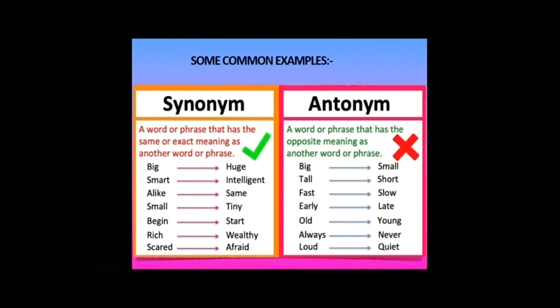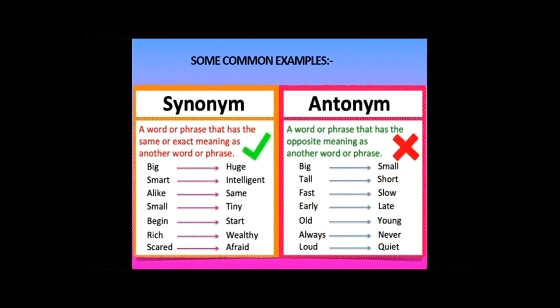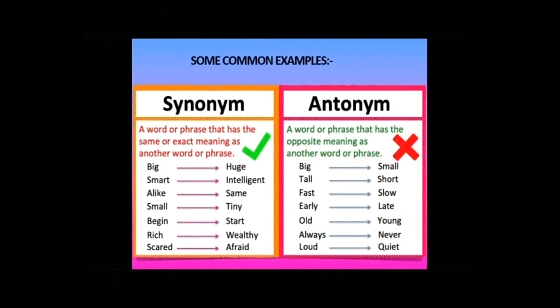Then: alike, same, ditto. Small, tiny, mini — only degrees differ but they are all synonyms. Begin — start: 'Let's begin the race' or 'Let's start the race.' Rich — wealthy: 'He is very rich' or 'He is very wealthy.' Scared — afraid: 'I am scared of lizards,' 'I am afraid of lions.' Look at the other side where there is a cross — that projects the opposite meaning, which is antonyms.